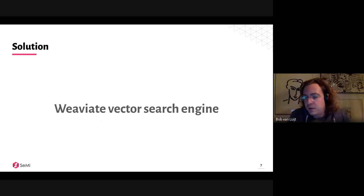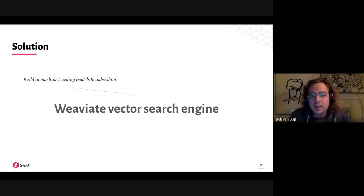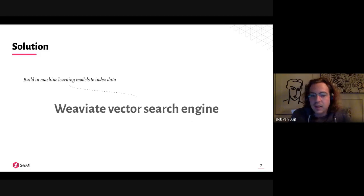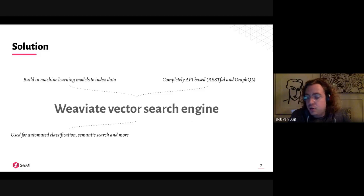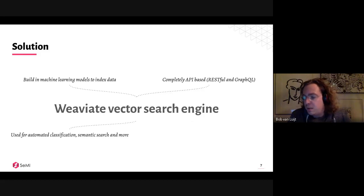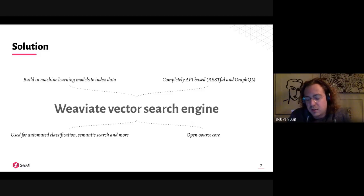That's where Weaviate comes in and what Weaviate aims to solve. Weaviate is a vector search engine. It has built-in machine learning models to index data. The most common use cases we currently see are automatic classification and semantic search, and we also see people using Weaviate as core infrastructure. Weaviate has an open source core, so you can find everything on GitHub.